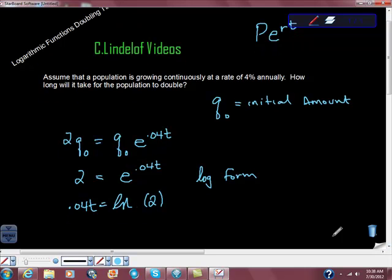So I got that for ln of 2. Now this is calculator math. So I do a little bit of calculator math here, and I get the time is 17.3 years. It doesn't tell me what the population is going to be, but it will be twice what it is now.